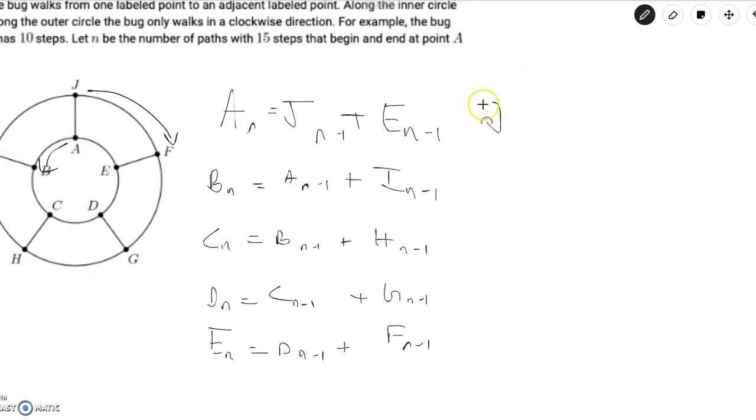So, if we have J, we have J of n is equal to A of n-1 plus I of n-1. And then F of n is equal to J of n-1 plus E of n-1. G of n is equal to F of n-1 plus D of n-1. And then H of n is equal to G of n-1 plus C of n-1. I of n is equal to H of n-1 plus B of n-1.